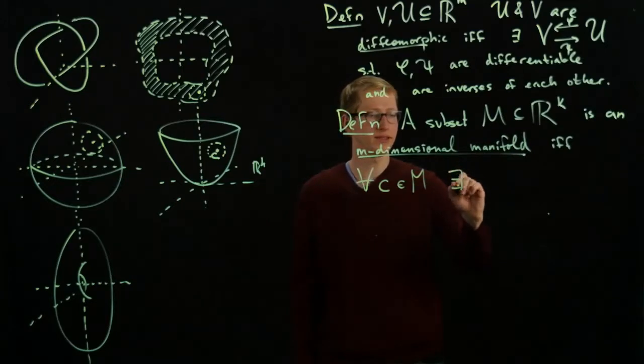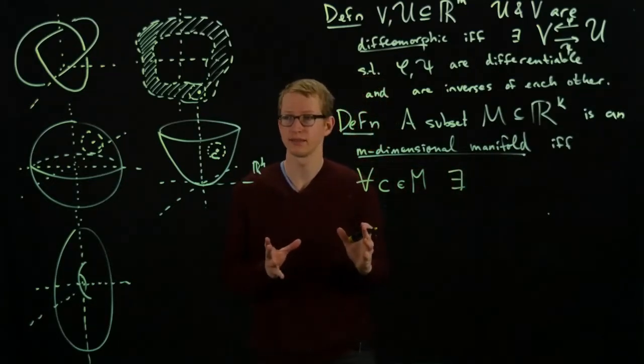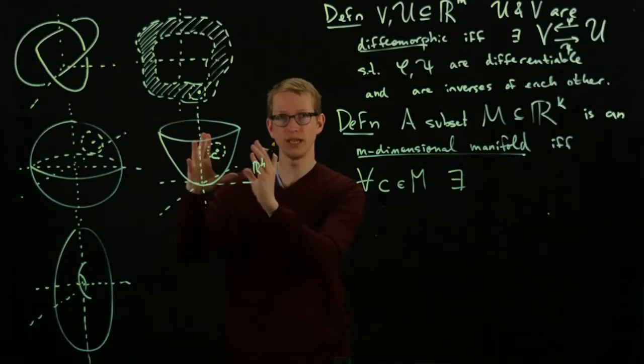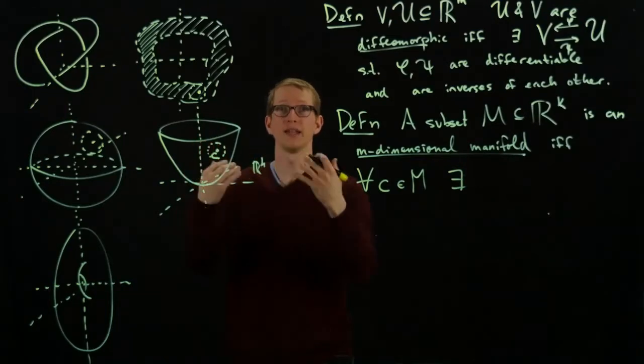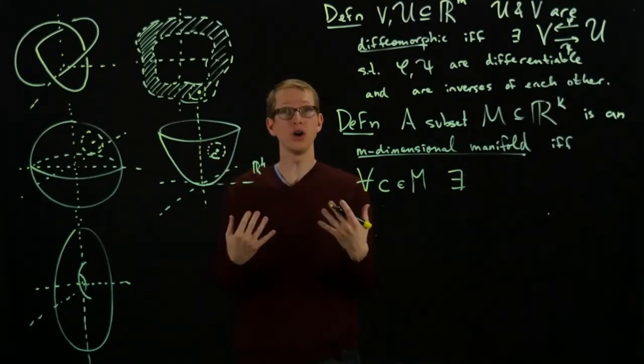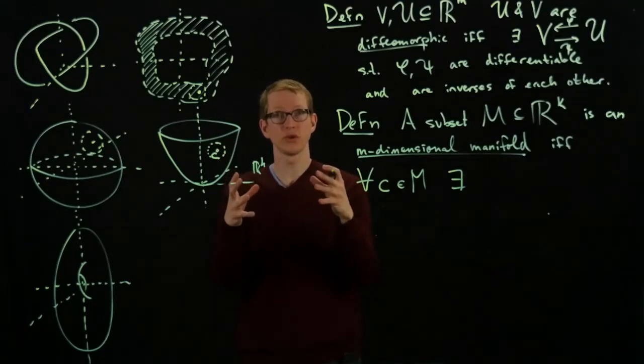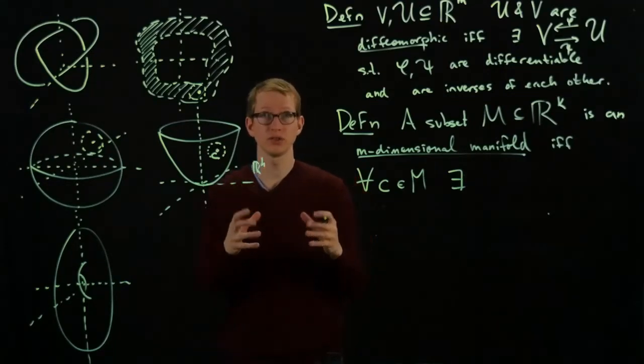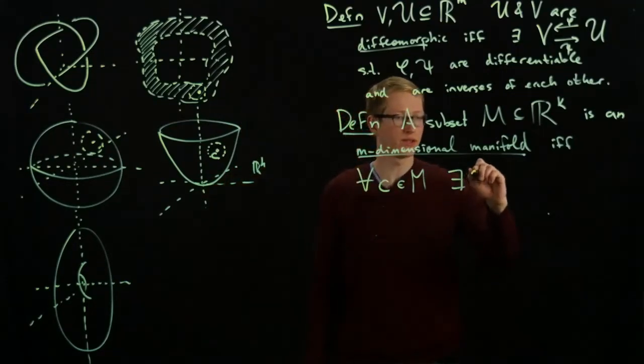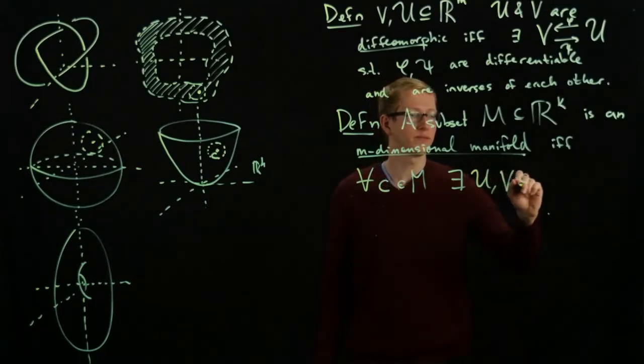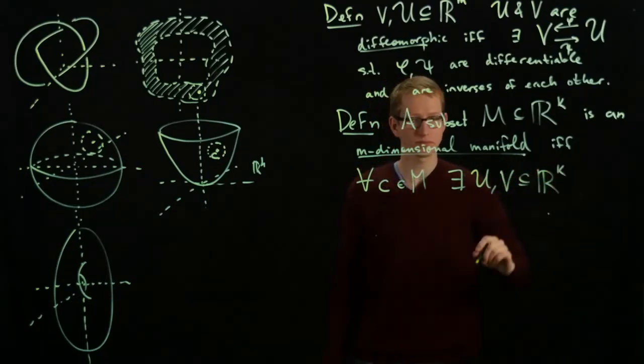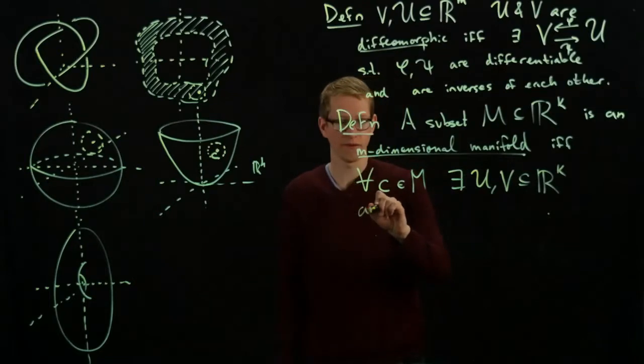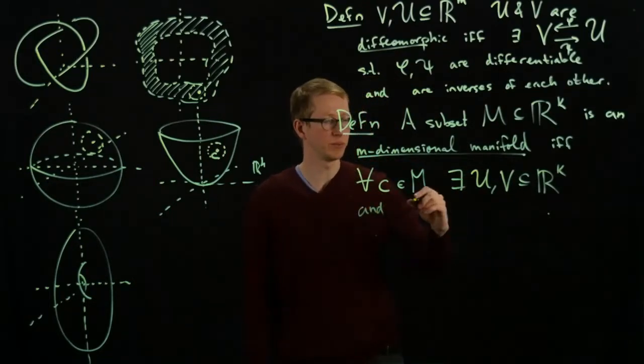there exist two open sets, one open set in RK which is going to intersect with our surface, and another open subset also of RK, but this time it's going to intersect with a very special surface. There exist open sets U and V, both in RK, and a diffeomorphism between U and V.